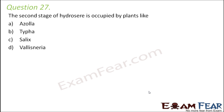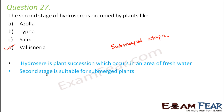Question number 27. The second stage of Hydrosere is occupied by plants like Azolla, Typha, Salix and Vallisneria. Let us quickly recall the various stages of Hydrosere. The first stage is the plankton stage where you have phytoplanktons and zooplanktons. The second stage is the submerged stage, where you have submerged plants. An example of a submerged plant is Vallisneria. So the second stage is suitable for growth of deep-rooted submerged species, and Vallisneria is one such example. Hydrosere is the plant succession which occurs in an area of fresh water, and the second stage is for submerged plants.